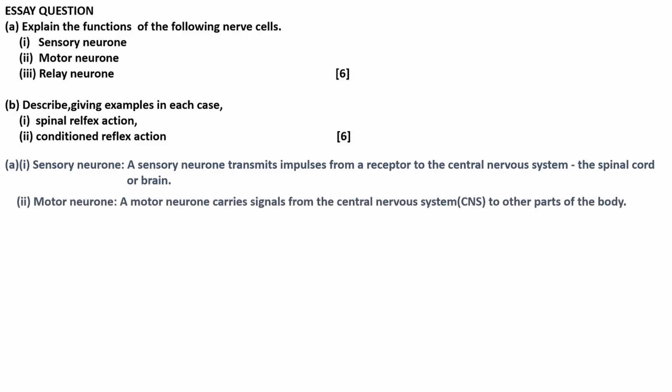So what is the function of a sensory neuron? A sensory neuron transmits impulses from a receptor to the central nervous system, which is the spinal cord or the brain. Then a motor neuron carries signals from the central nervous system to other parts of the body. Then a relay neuron connects sensory neurons and motor neurons.